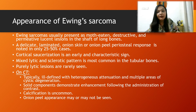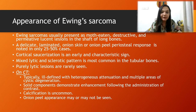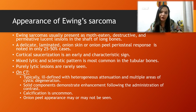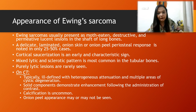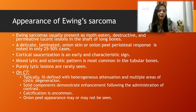A mixed lytic and sclerotic pattern is most commonly seen in tubular bones, while purely lytic regions are rarely seen. On CT scan, we will typically see an ill-defined heterogeneous attenuation lesion with multiple areas of cystic degeneration. Solid components demonstrate enhancement following contrast administration. Calcification is uncommon, and onion peel appearance may or may not be seen, as it is present in only 25 to 50% of cases.